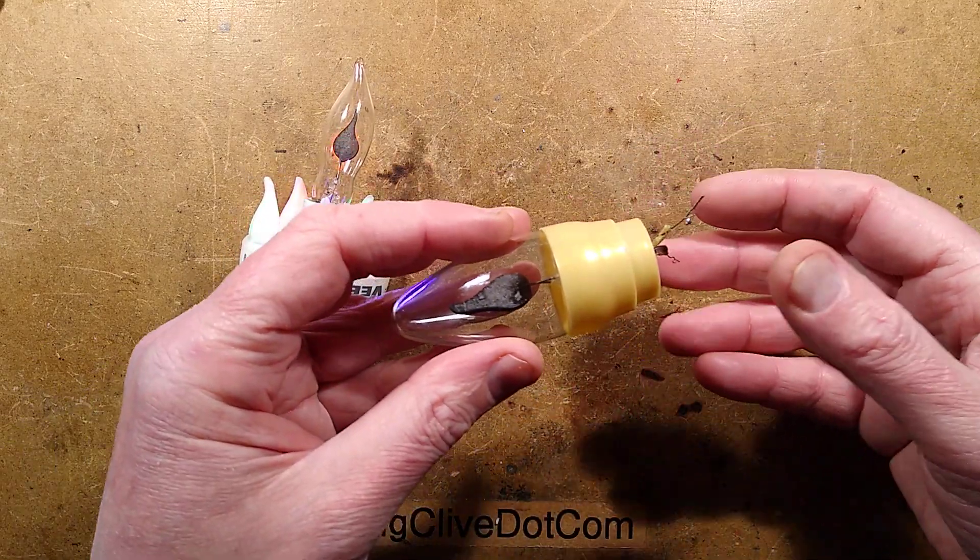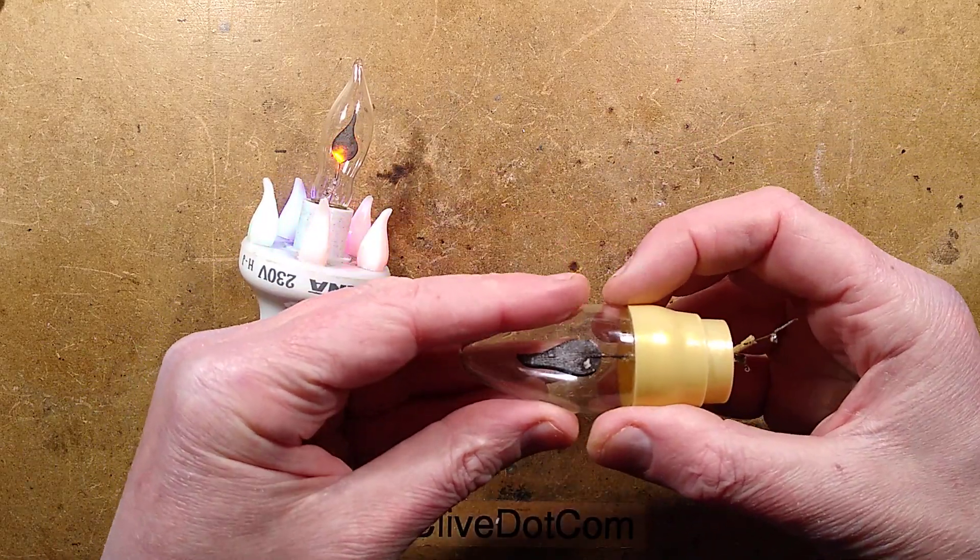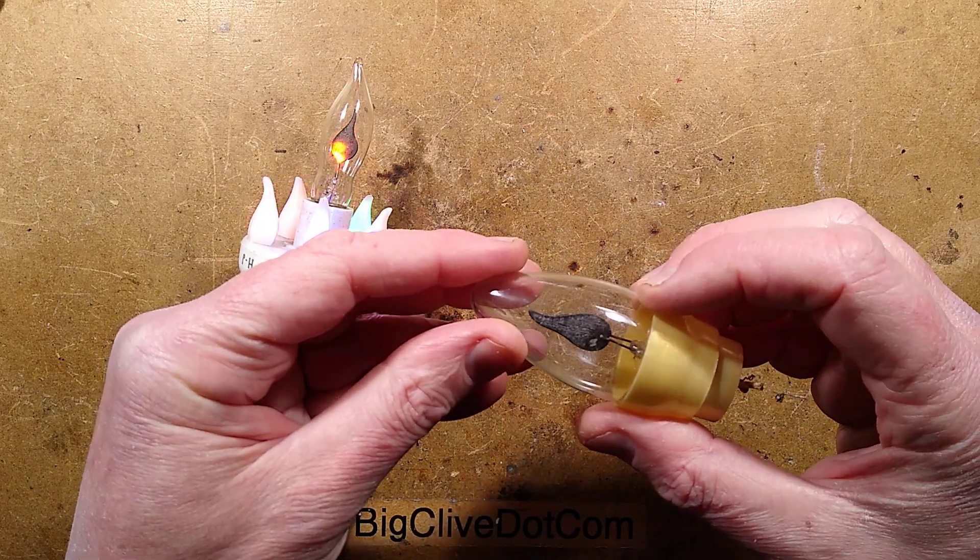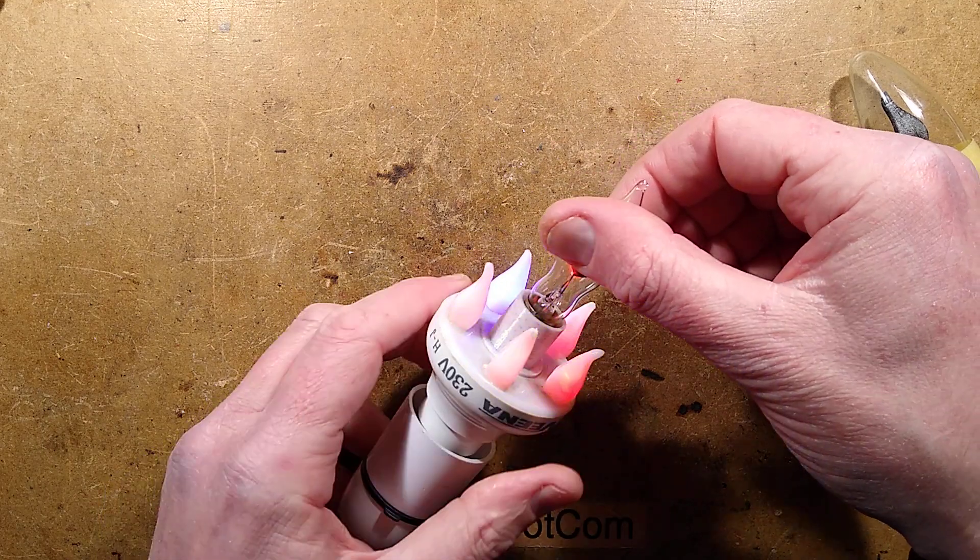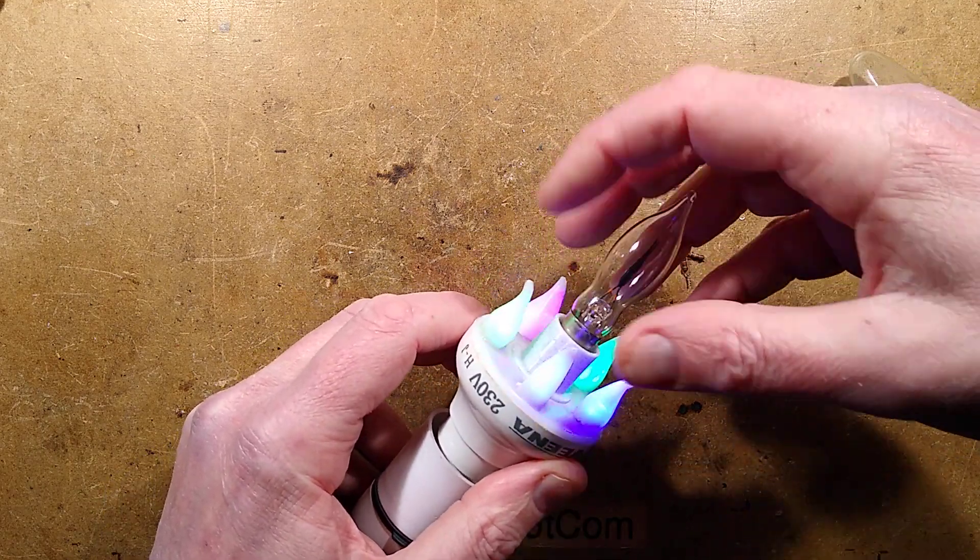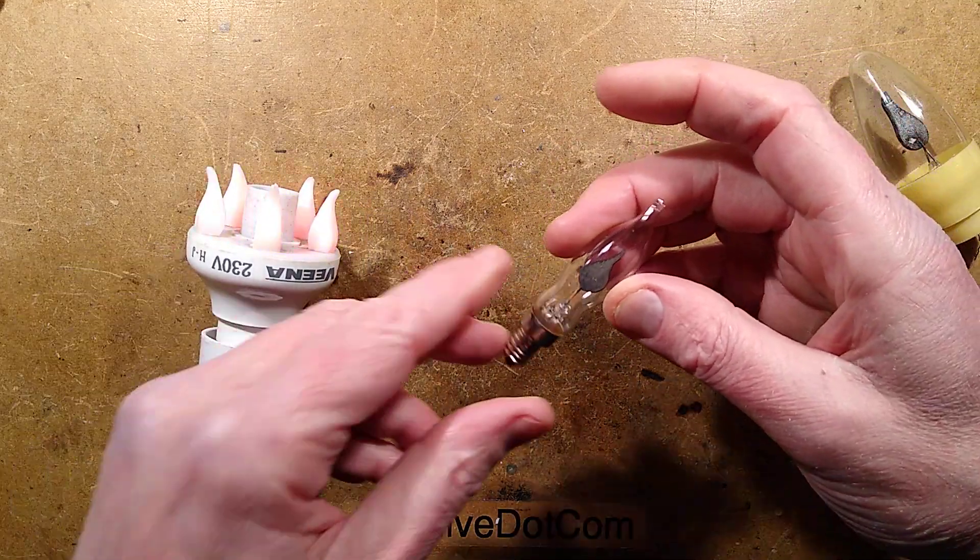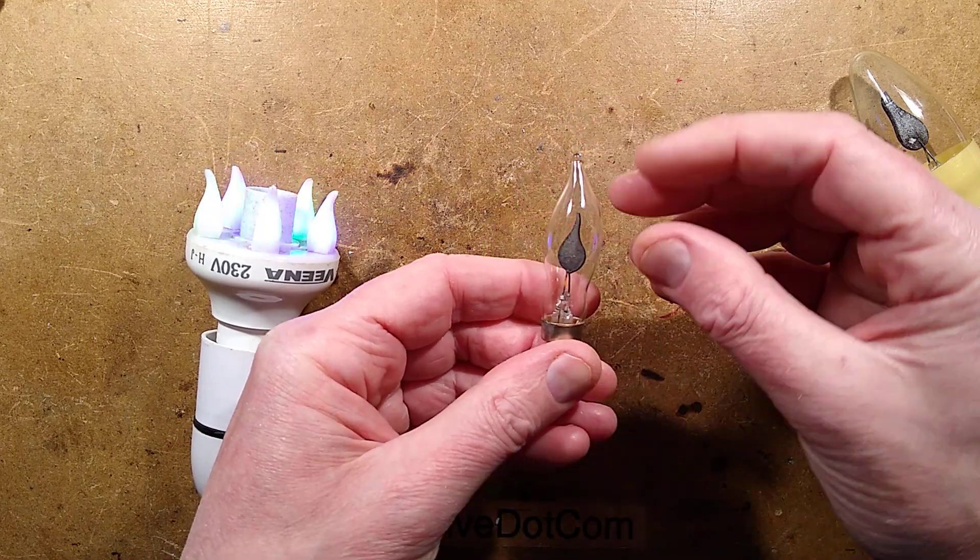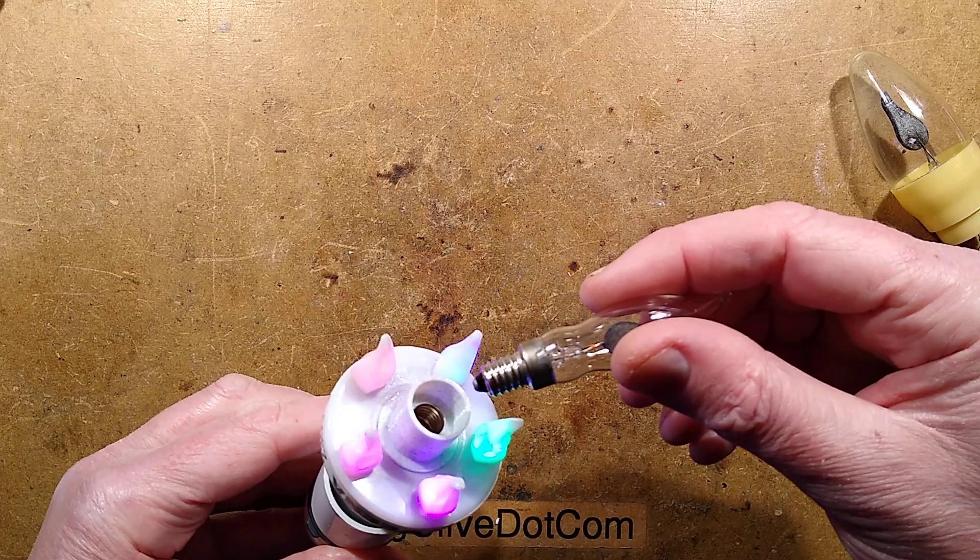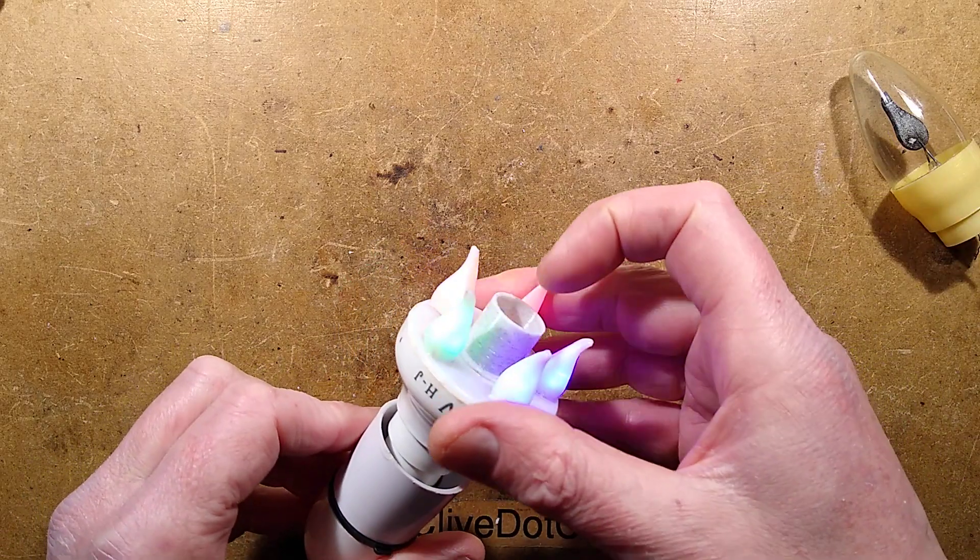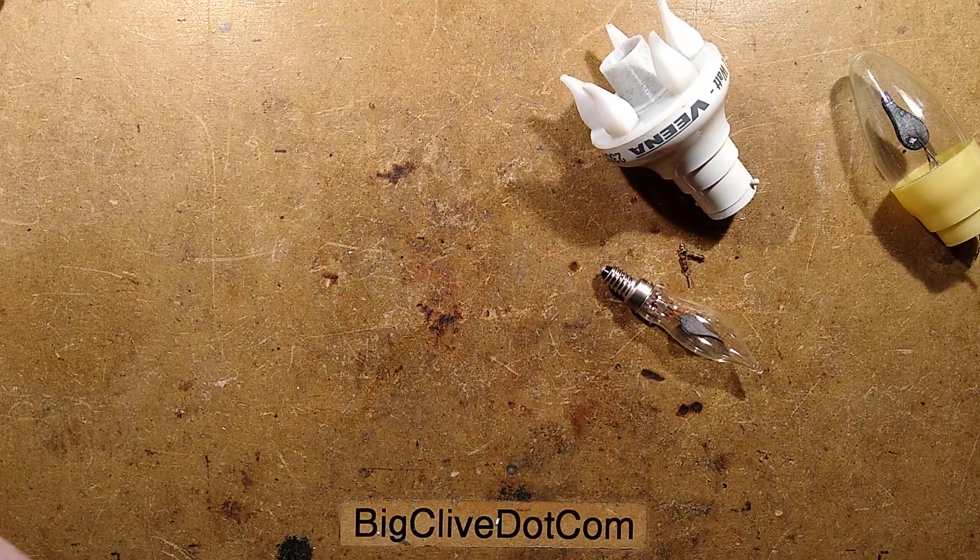So I looked for alternatives. One possibility was to order up another neon candle lamp and try and get glass glowed out. But then I thought, what if I use one of the Christmas lighting type lamps? Because you get these ones for the little neon candelabras or strings of the neon flicker flame lamps. But that would have required a dedicated base, which is exactly what I did.